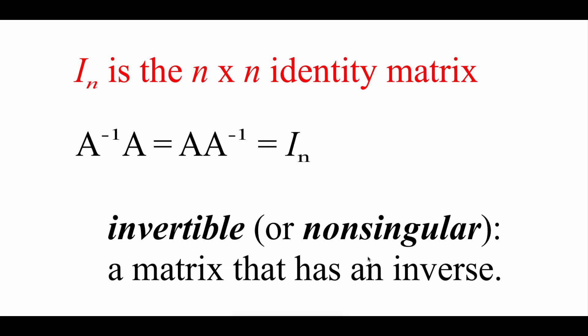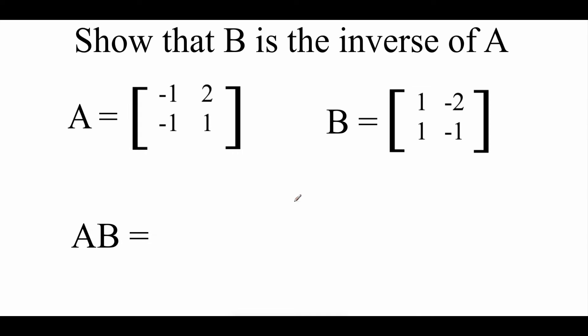If a matrix has an inverse, we would say that it's invertible, or another word we could use to describe it would be non-singular. So the first thing we're going to do is show that matrices are inverses of each other, and we're going to do that by using matrix multiplication.